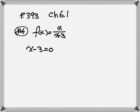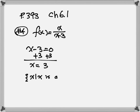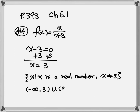We are going to solve for x. Let's get rid of the negative 3, so plus 3 plus 3, and x is equal to 3. To find the solution, x is a real number, but x cannot equal 3. So the interval notation will be negative infinity to 3, union 3 to positive infinity. That's the answer.